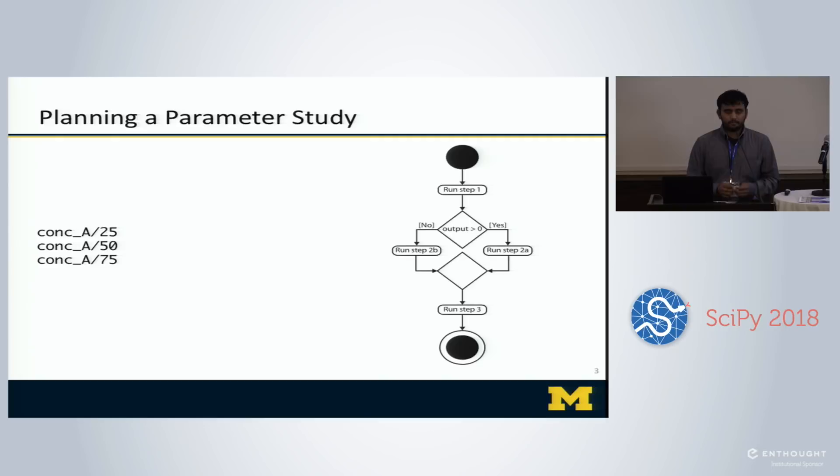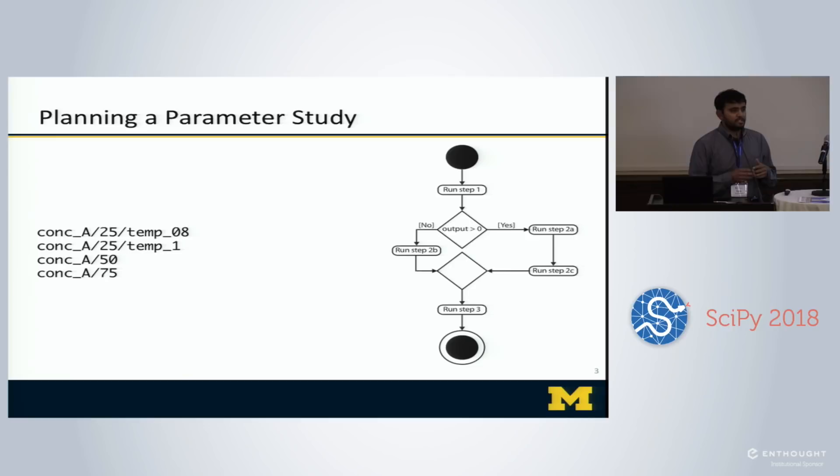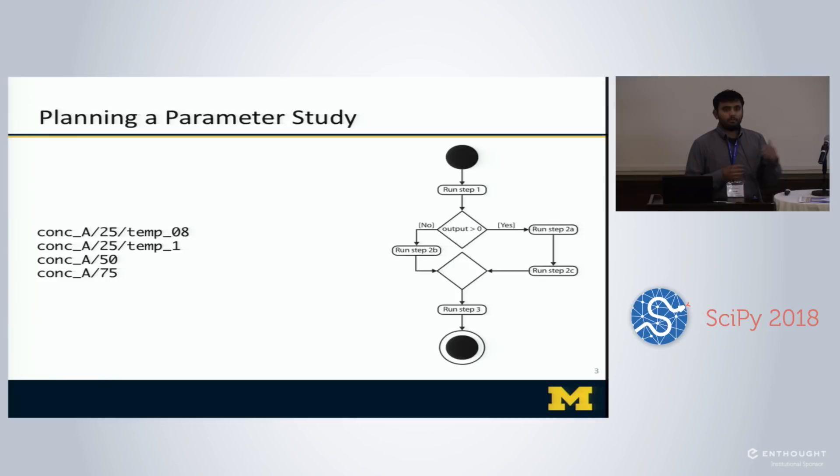You also have issues with how difficult it could get as you adapt your data space. For example, you might realize that below some concentration your system actually depends on temperature. So you introduce temperature to a couple of these points, but now your data space looks heterogeneous. If you want to parse this programmatically, it could be problematic to have temperature in some places and not in others, so you might want to go back and make this more uniform.